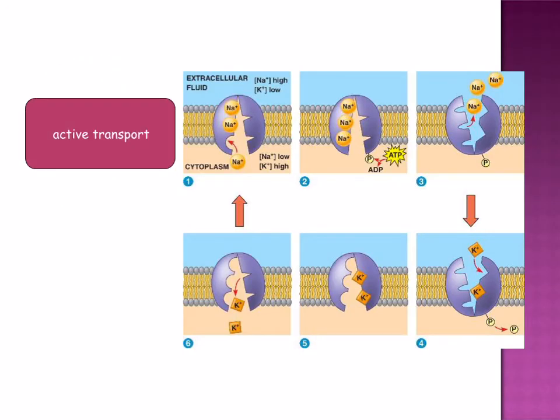Active transport: ATP provides the energy to move molecules or ions against their concentration gradient. For example, the sodium-potassium pump. Energy is needed for the protein, which acts as the pump, to pump sodium out of the cell and potassium back into the cell. This is important in the transmission of electrical impulses in nerves.